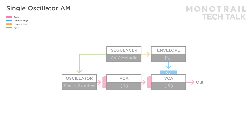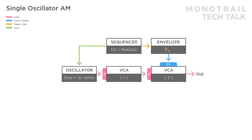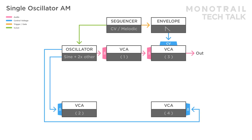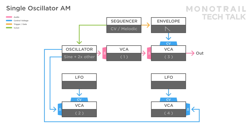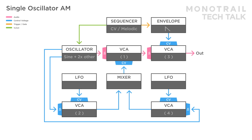You can expand and add to this concept as much as you like. Here is the same basic voice, but this time two different alternate waveforms from the main oscillator are sent to two VCAs. In this setup, a saw wave and sub-octave output are used. Both VCAs are modulated with free-running LFOs, and the result is mixed together before modulating VCA1.